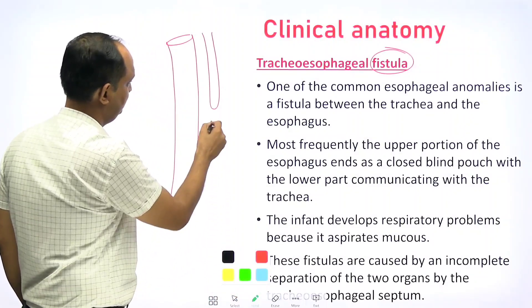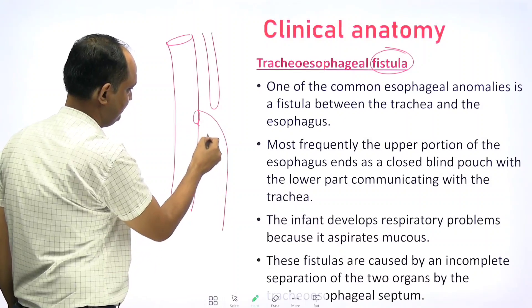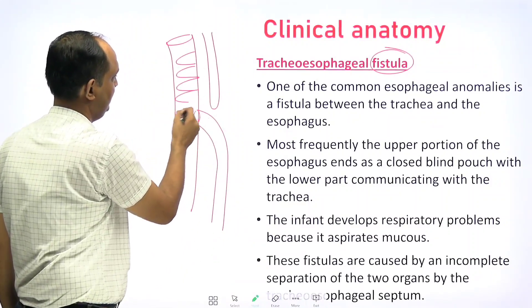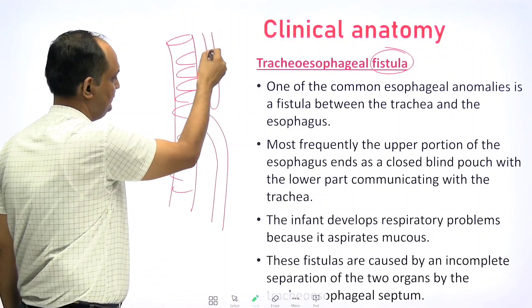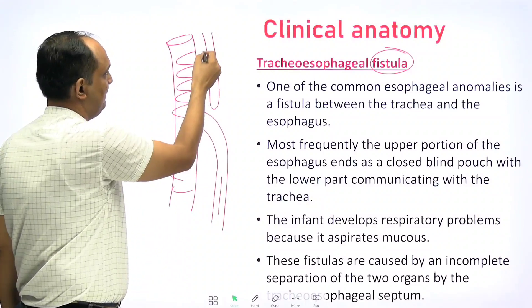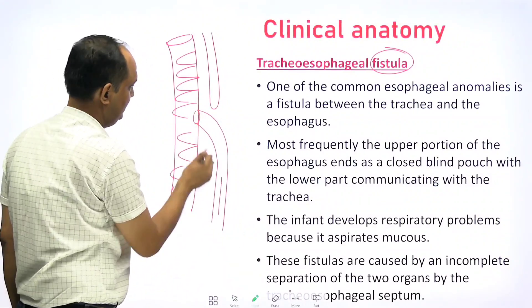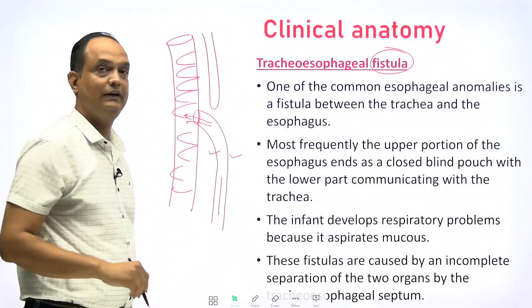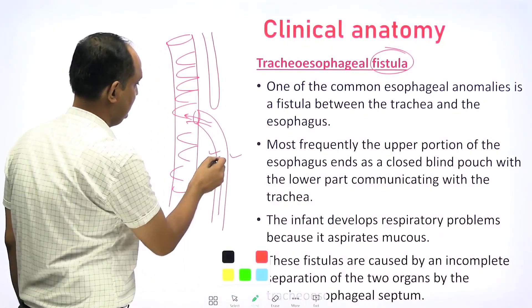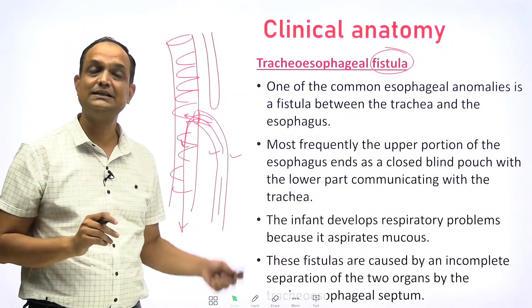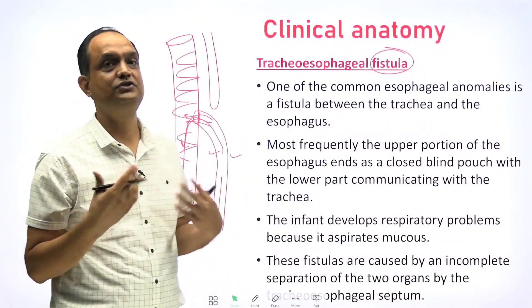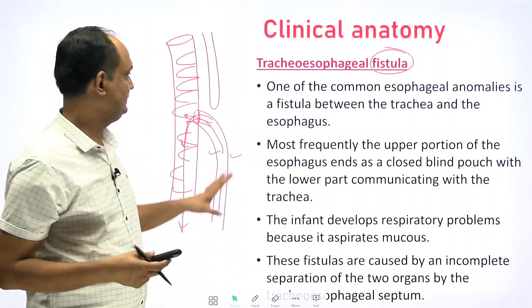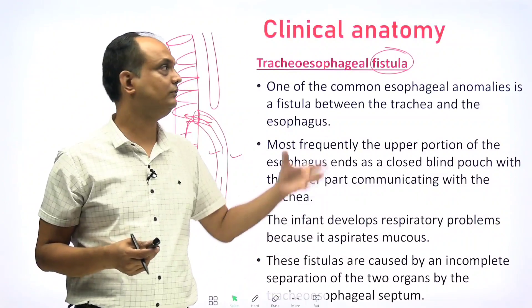The trachea is anteriorly placed relative to the esophagus. The esophagus, which should be a single pipe, is now in two halves — the upper part ending as a blind pouch and the lower half having a communication with the trachea. The esophageal glands produce mucus, and these secretions enter the respiratory tract. As a result, this type of child has hoarseness or stridor and very frequent repeated chest infections because mucus is going into the trachea.